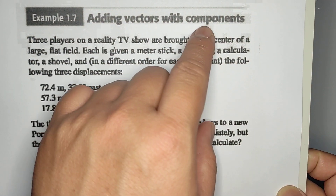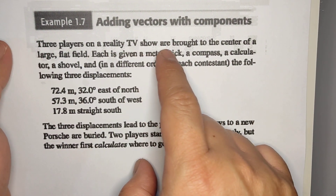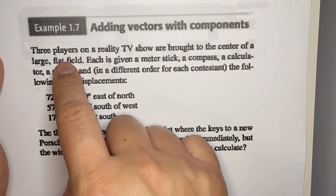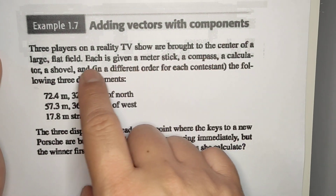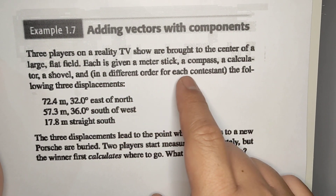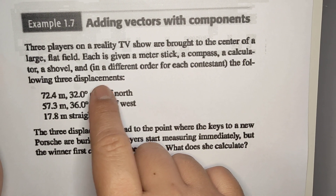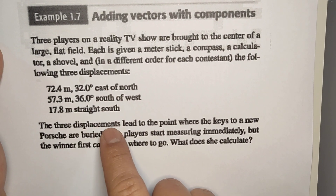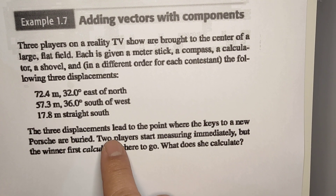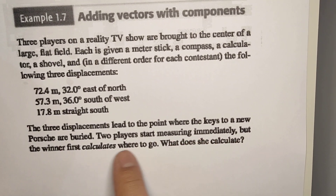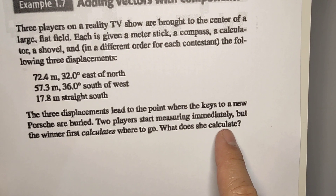Example 1.7: Adding Vectors with Components. Three players in a reality TV show are brought to the center of a large flat field. Each is given a meter stick, a compass, a calculator, and a shovel, in a different order for each contestant. They are given three displacements, which lead to a point where the key to a new Porsche is hidden. Two players start measuring immediately, but the winner first calculates where to go. What does she calculate?